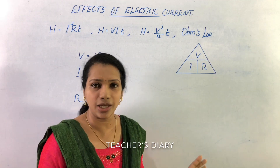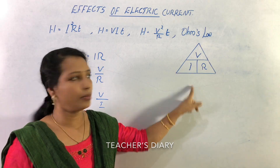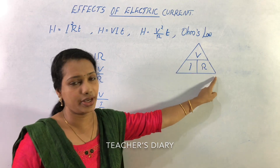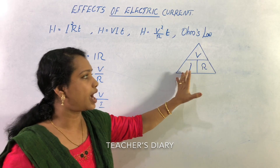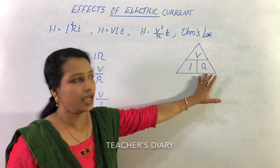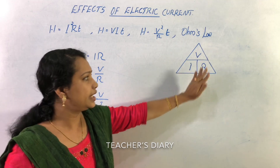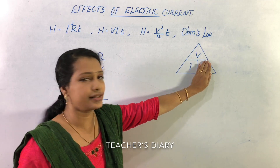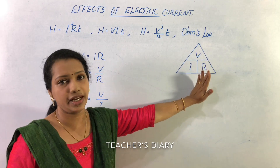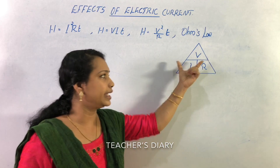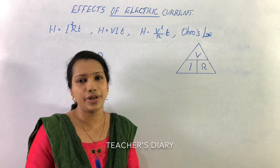This is Ohm's Law. We can rearrange Ohm's Law using the triangle form — VIR. V is equal to IR. I is equal to V by R. R is equal to V by I. This is the triangle form for Ohm's Law.